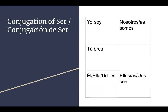So just to start, we have the conjugations of ser, which we've been going over for a while. We have: yo soy — I am; tú eres — you are; él, ella, usted es — he is, she is, you formal are; nosotros or nosotras somos — we are; ellos or ellas or ustedes son — they are or you guys are.